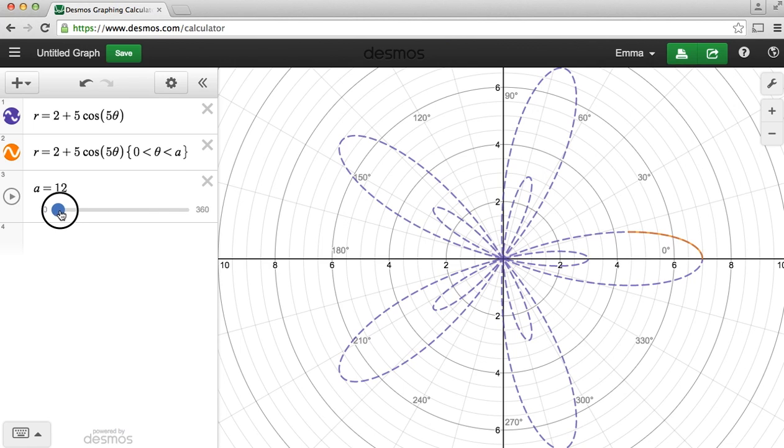And now if I pull my slider along, I can see that every time we go from little petal to an opposite big petal to a little petal and all around.